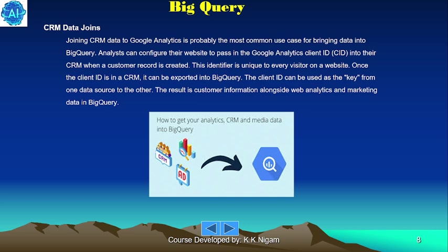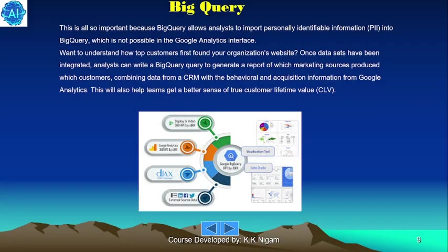Joining CRM data to Google Analytics is probably the most common use case for bringing data into BigQuery. Analysts can configure their website to pass the Google Analytics client ID (CID) into their CRM when a customer record is created. This identifier is unique to every visitor on a website. Once the client ID is in the CRM, it can be exported into BigQuery and used as the key to join one data source to the other. Importantly, BigQuery allows analysts to import personally identifiable information (PII), which is not possible in the Google Analytics interface.